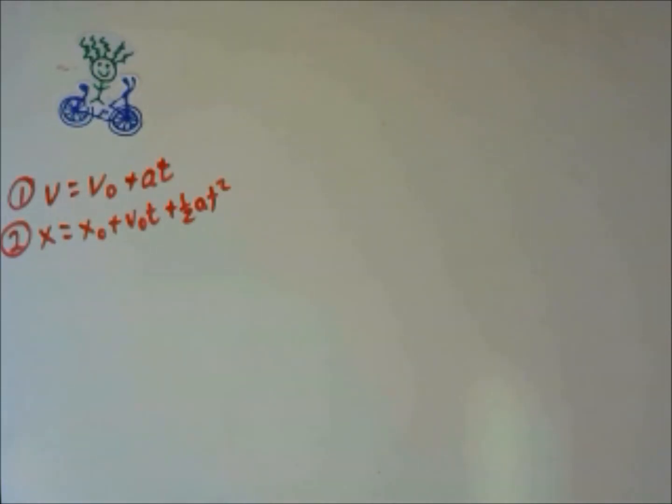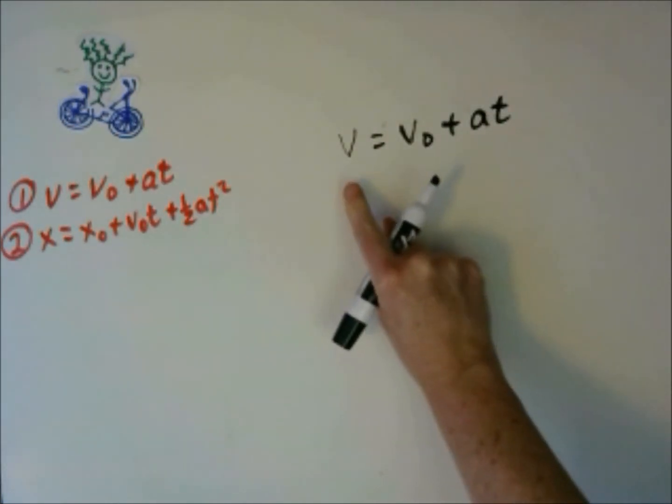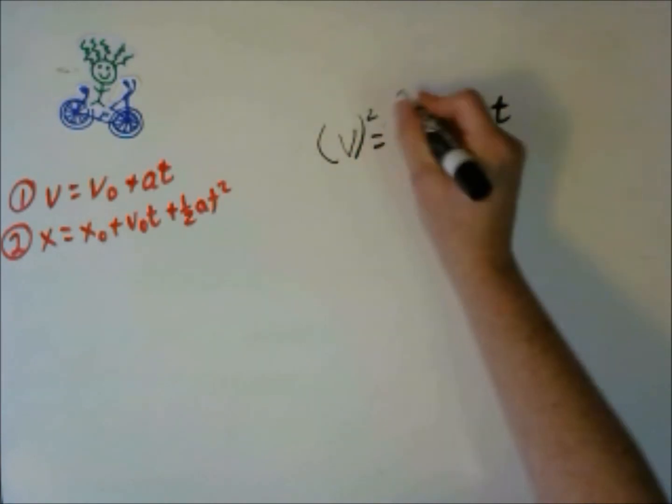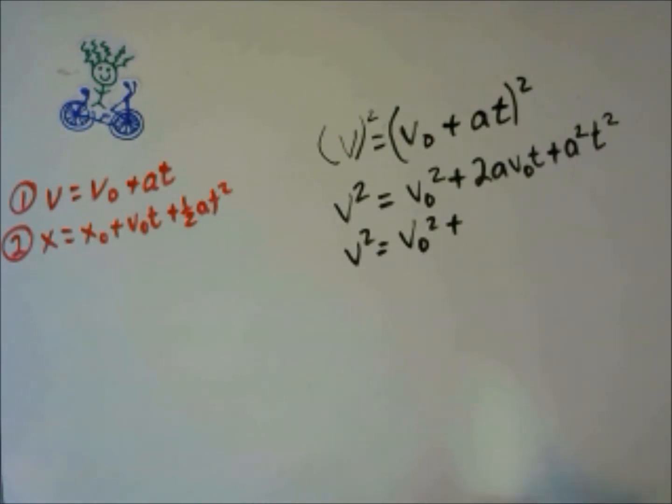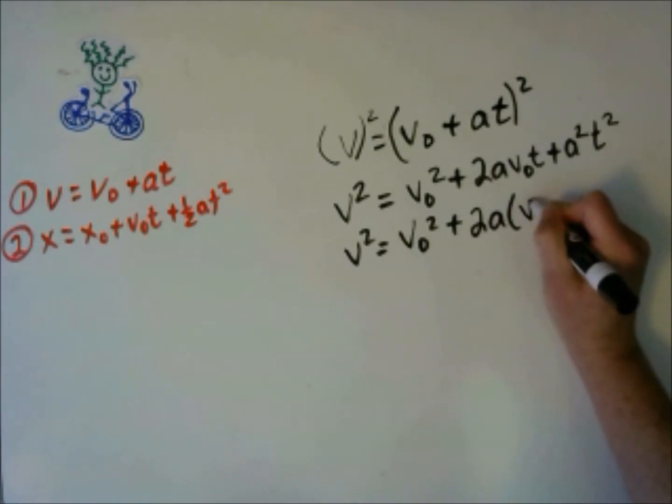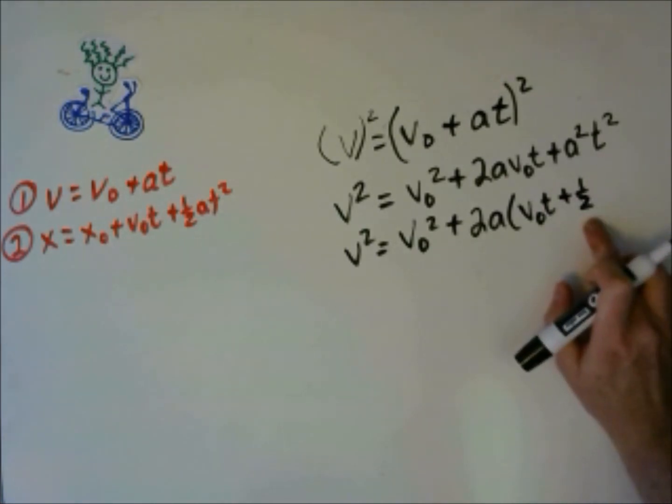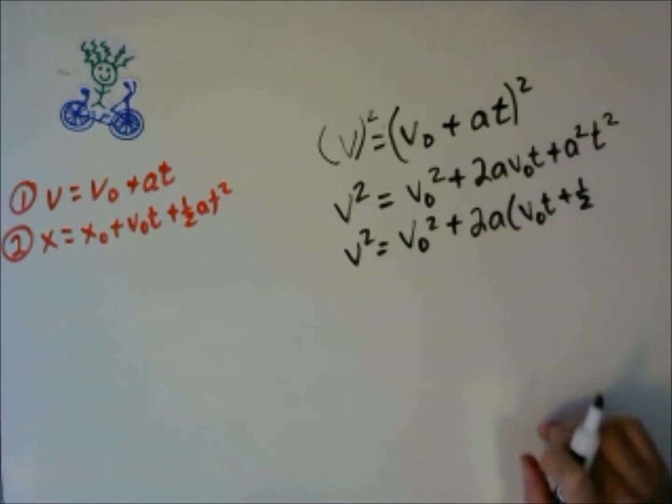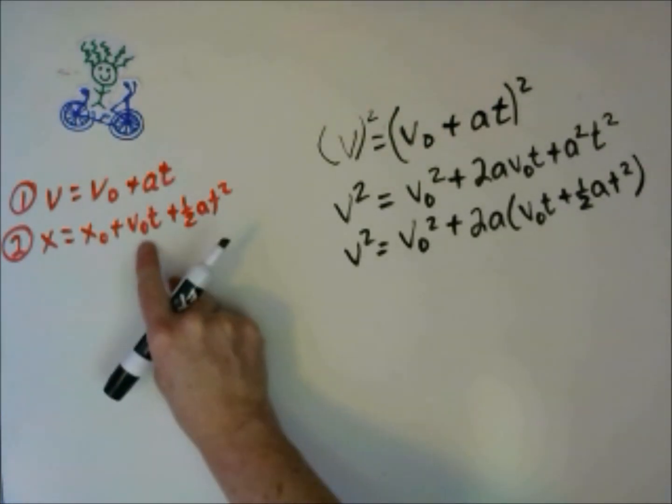Our third kinematics equation comes from combining the first two. The first thing we're going to do is square both sides. We're going to pull out the 2 and the A from these last two terms. This becomes a half because this is 1, and a half times 2 gives us 1.